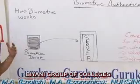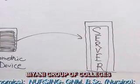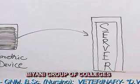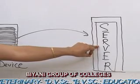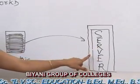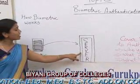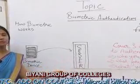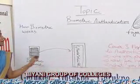When a user gives his physical identities to the biometric device, it sends them to the server in encrypted form. The server then decrypts the physical identities into normal form and matches them in the database.